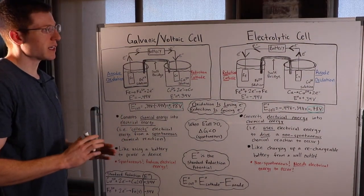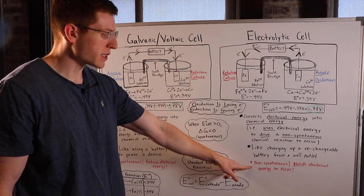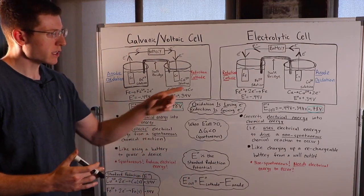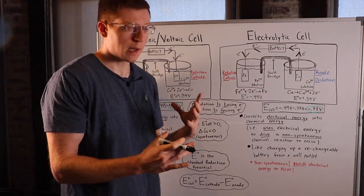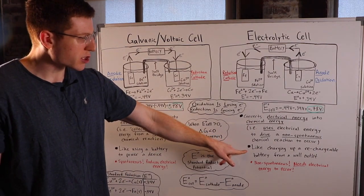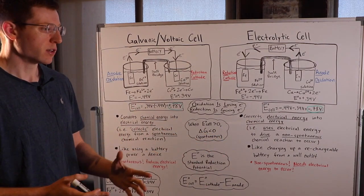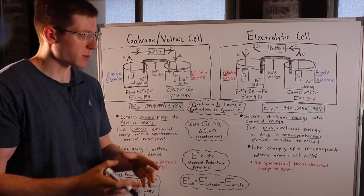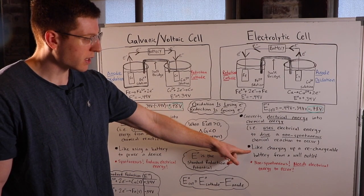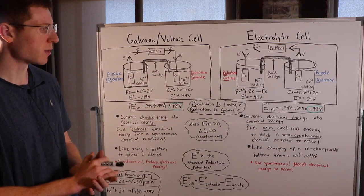Moving on to the electrolytic cell — this is a non-spontaneous process that needs electrical energy to occur. This redox reaction doesn't naturally want to happen; we have to power it. This is analogous to charging a rechargeable battery from a wall outlet — your phone is not going to charge itself. You have to plug it in and supply the electrical energy to drive this non-spontaneous chemical reaction.